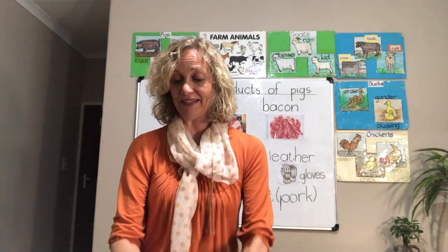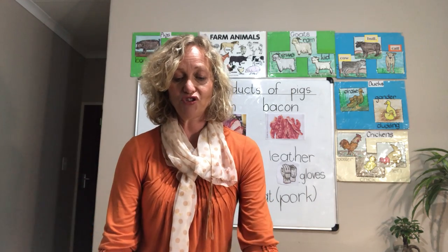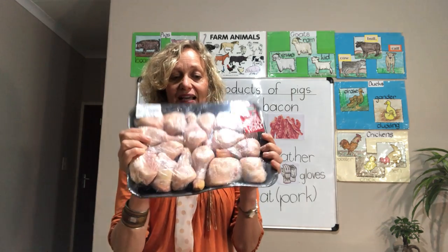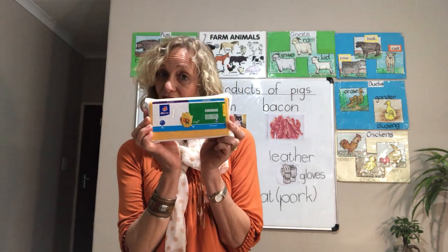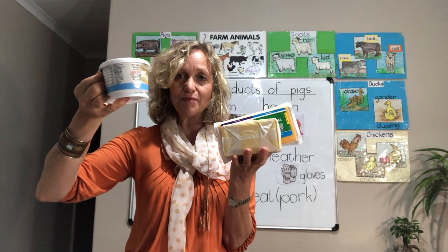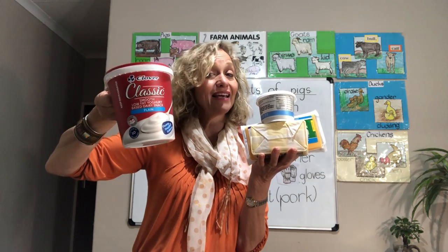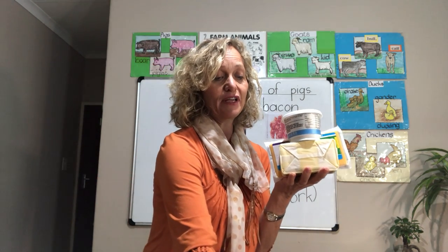So this is what I found in my cupboard. I've got some bacon, some eggs from chickens, and some drumsticks and thighs also from chickens. The bacon would be from the pigs. And I've got some cheese and butter here — these two are dairy products — and also some cottage cheese, which is also a dairy product, and some yogurt, also a dairy product.